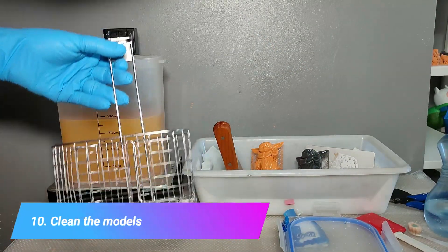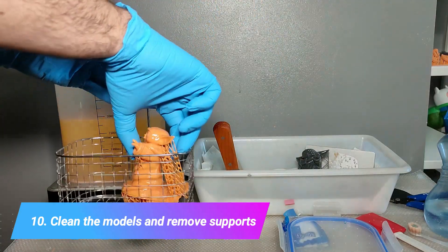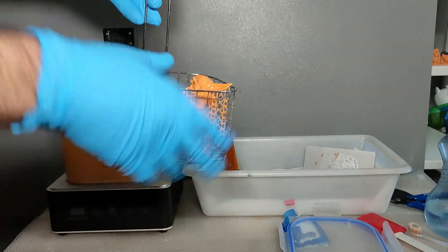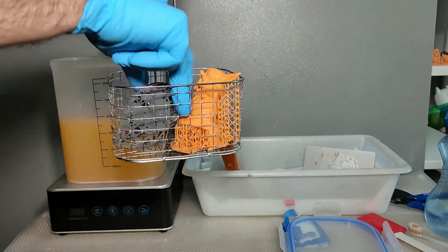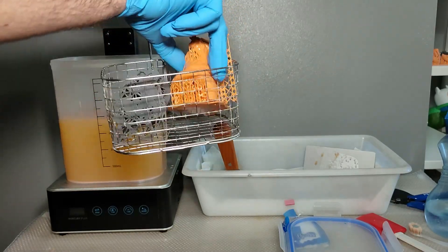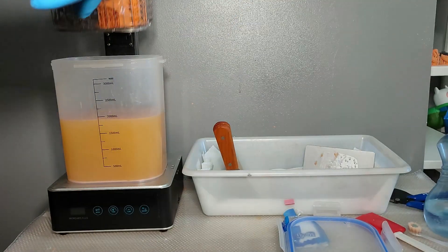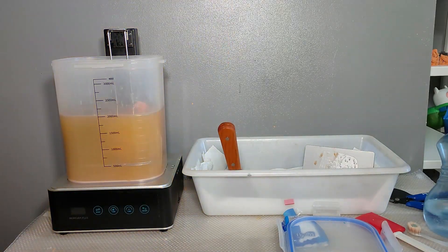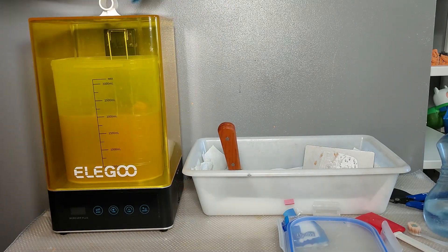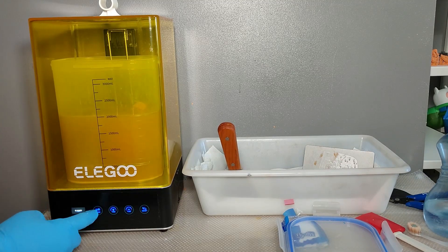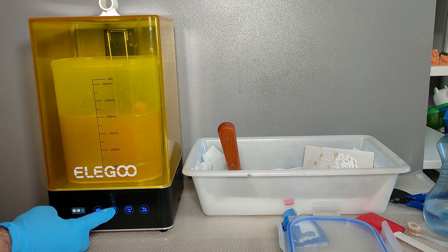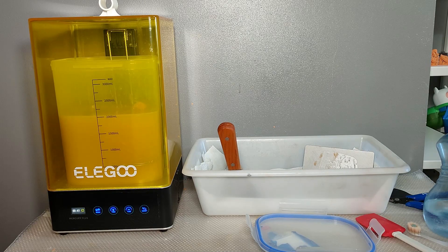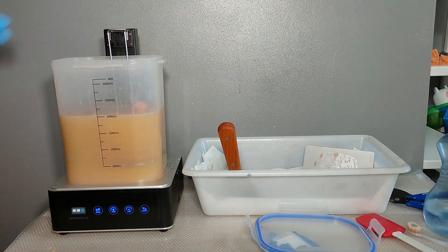After you finish the print, you'll notice that the model is all wet with uncured resin, and the next process is basically cleaning the model. I'm using a wash and cure station here, the Elegoo Mercury Plus, but you can use a pickle jar or any container that you can use IPA to wash your print. But definitely using a wash and cure station is a fast way to do that and it's super simple. Just define the time, the machine just cleans the print and that's it.